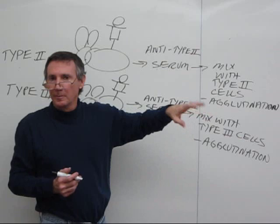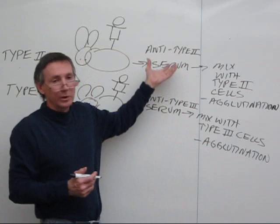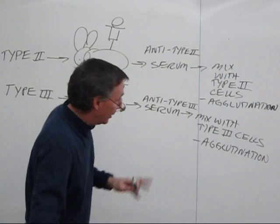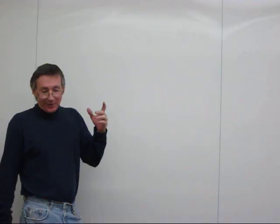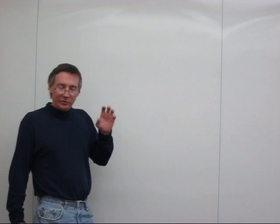And this is really consistent. These strains, you raise type 2 cells in culture, many, many, many transfers, they're still type 2. And they're still going to only bind to the type 2 antibodies and not to the type 3 antibodies. Griffith knew all of this. This is background for him.